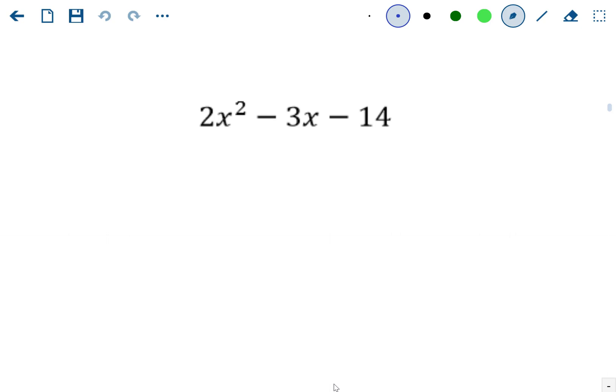Now since 2x squared is prime, the only options for your first terms are going to be 2x and x. In 14, then you could kind of try different factors at 14 and see which one works. But since this is a swing method video, I'll show it using swing method.